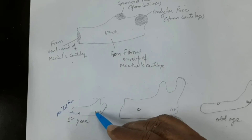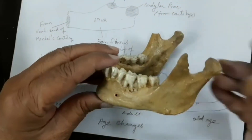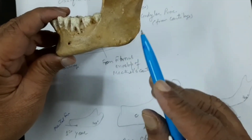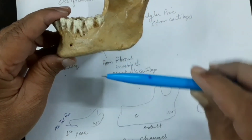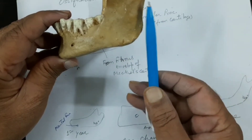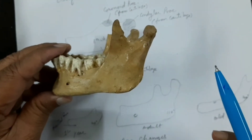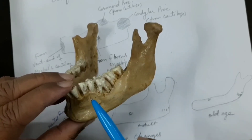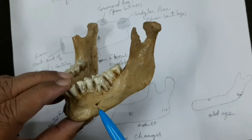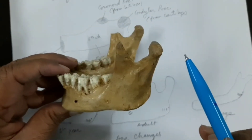In the adult mandible, the angle of the mandible between the lower border of the ramus and the posterior border of the ramus is around 110 degrees. The mental foramen is almost in the middle between the lower border and alveolar border. The foramen, which was directed forward in infants, is now directed backward and upward in adults.